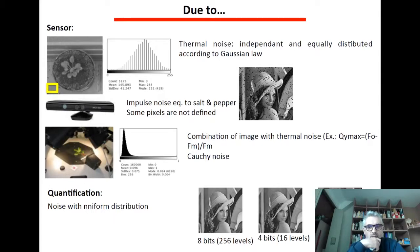Also combination of images with thermal noise can cause heavy tail distribution like the Cauchy noise. And again you can have quantification noise with a uniform distribution which is due to the level of bit, number of bits on which you will compress your images.